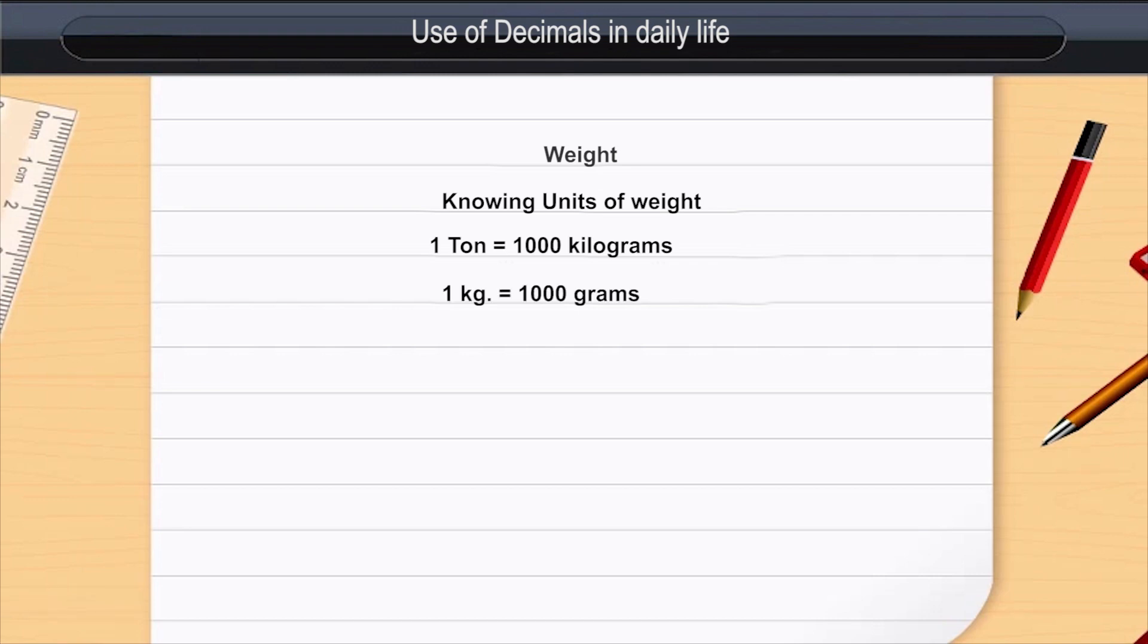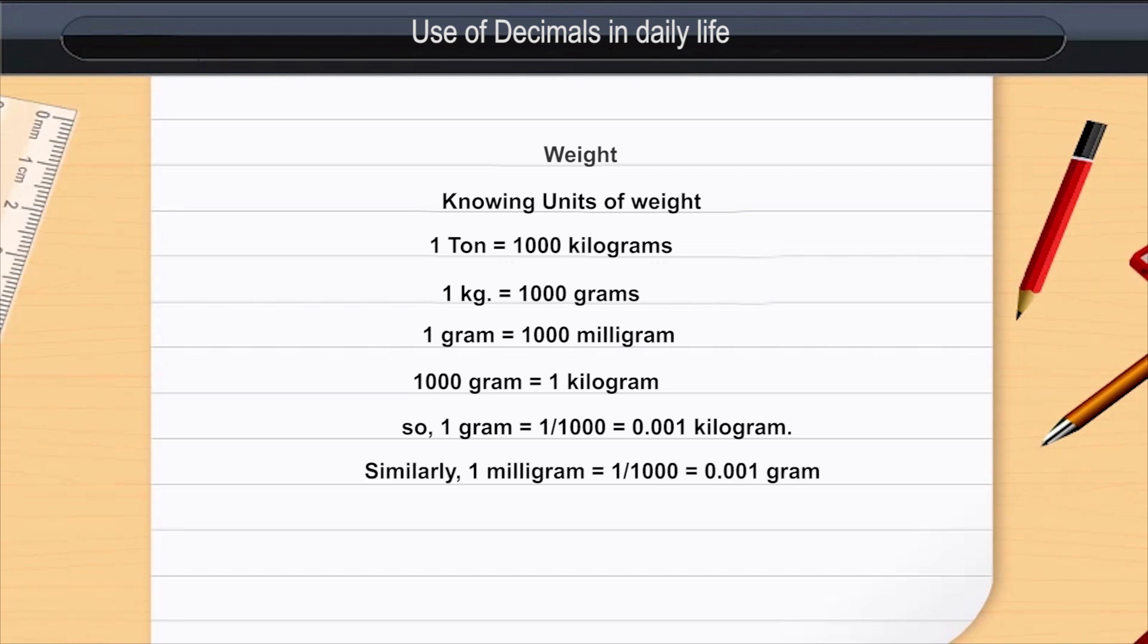We can see that we can also write 1 gram as 0.001 kilogram, 1 milligram as 0.001 gram, and 1 kilogram as 0.001 ton.